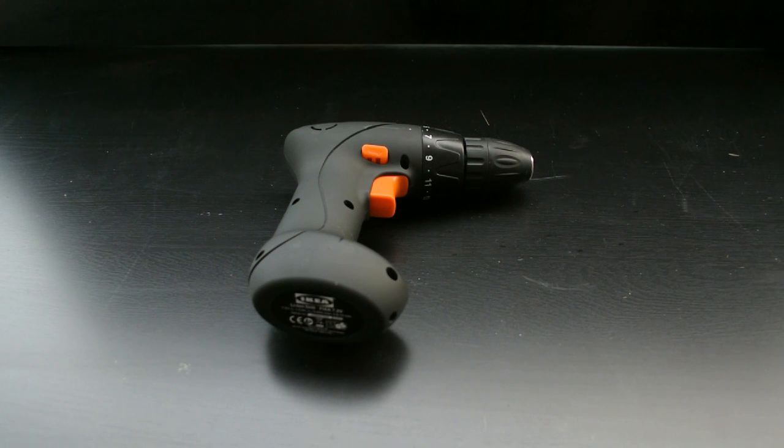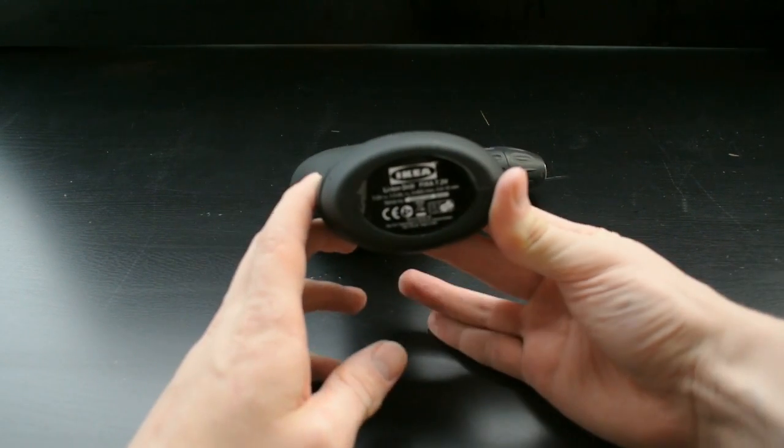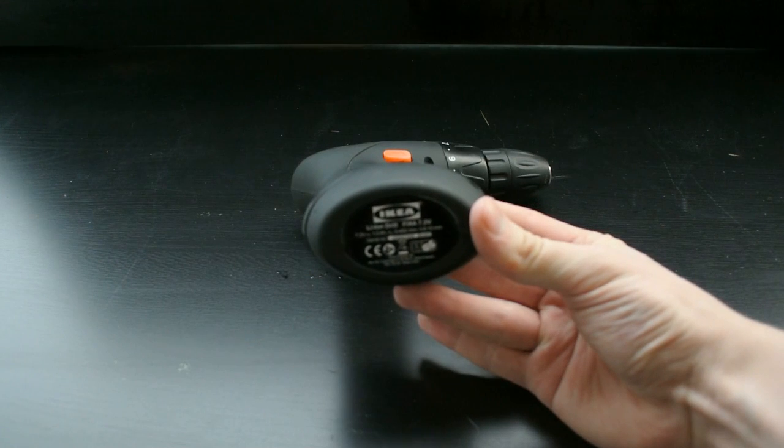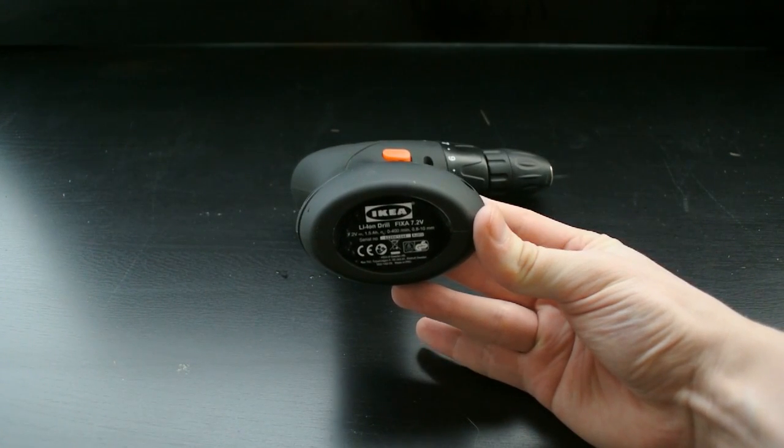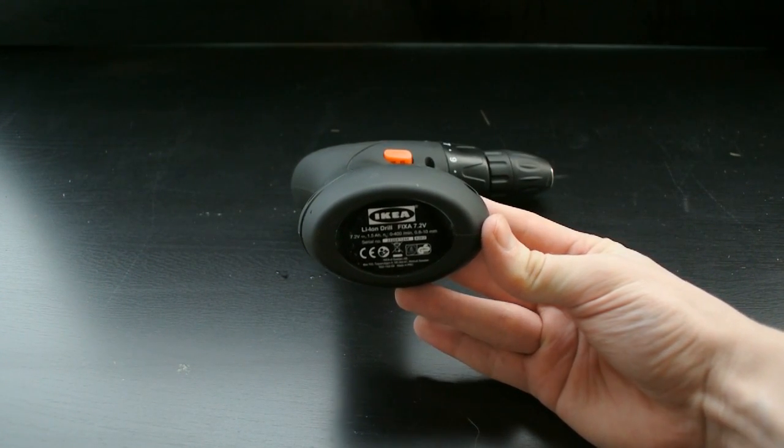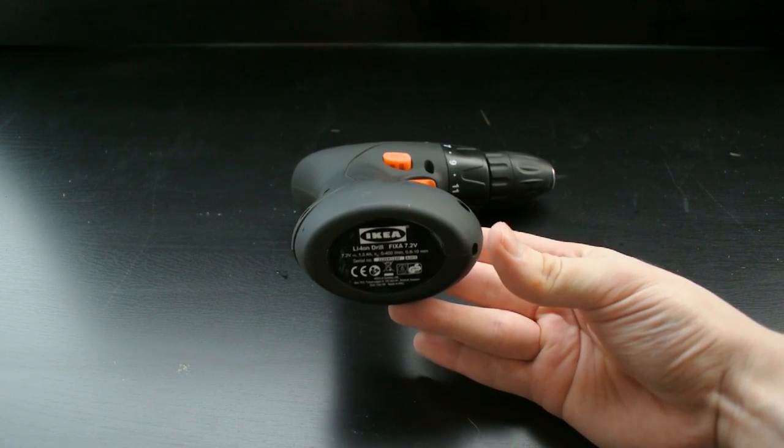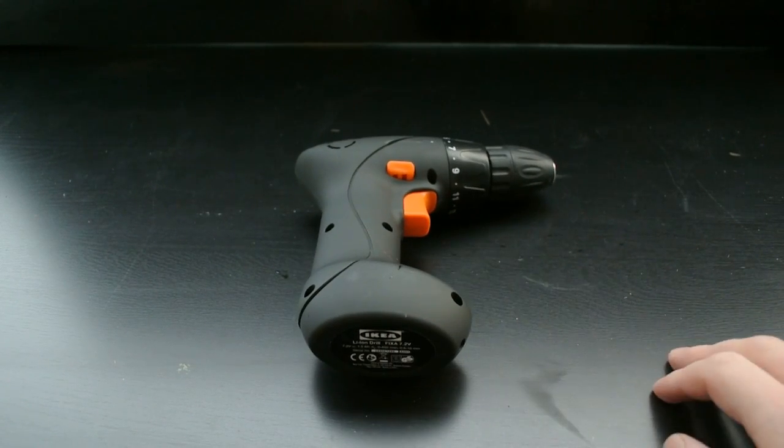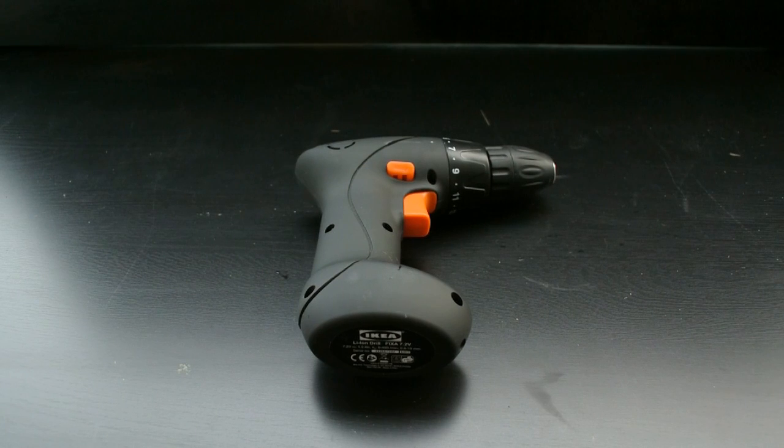So I went and got myself a Fixa 7.2 volt cordless drill. The only problem is that the battery went out in two weeks after I bought it and I can't take it back because I've lost the receipt for the purchase.